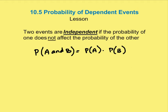In this lesson we're going to talk about the probability of dependent and independent events. So first let's talk about independent events. Two events are going to be independent if the probability of one does not affect the probability of the other. Well, what does that mean?